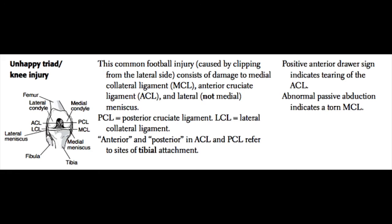There are several important injury patterns to recognize for Step 1. A very common football injury occurs from a lateral force to the side of the body, called the unhappy triad. This involves damage to the medial collateral ligament, the anterior cruciate ligament, and the lateral meniscus — not the medial, but the lateral meniscus. MCL, ACL, and lateral meniscus — that's the unhappy triad, a very commonly tested football injury.